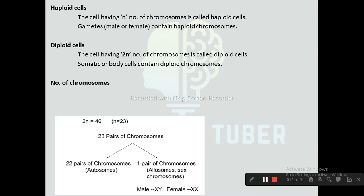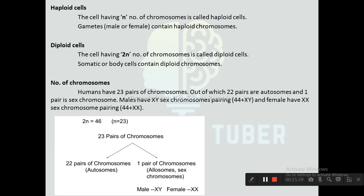Regarding chromosome numbers: humans have 46 chromosomes, that is 23 pairs — 22 pairs are autosomes and one pair is sex chromosomes. In males, the sex chromosome pair is XY, and in females it is XX. Males have the chromosome composition 44 + XY, totaling 46, and females have 44 + XX, also totaling 46.